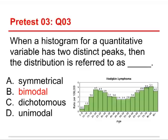It could be symmetrical, but it isn't necessarily — the two peaks can also be asymmetrical, as is the case here. Dichotomous means it has two values, like yes/no, on/off, in/out, and that's a different thing — that's going to be a nominal variable. Unimodal means one mode, which would be true of a normal distribution or a skewed normal. But this distribution is bimodal.